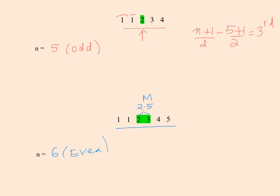Another way of finding the location of the middle numbers: since n is even, it is divisible by 2. So take 6 divided by 2, which gives 3. Then take the third number and the next one — adding 1 to 3 gives 4. So the third and the fourth numbers are the two middle numbers. Counting through: 1, 2, 3 — the first middle number is 2, and the second middle number is 3. The average of 2 and 3 is 2.5, so the median is 2.5.